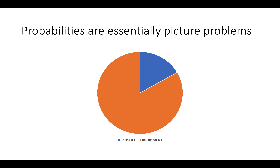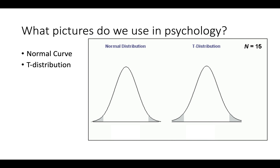Probabilities are essentially picture problems. This is the probability of rolling a one on a die or rolling not a one. We have six potential outcomes. The probability of rolling a one is one-sixth of the entire whole. Probabilities say there's a whole possibility of options that adds to 100% or a probability of one. All probability calculations can be converted to a picture problem.